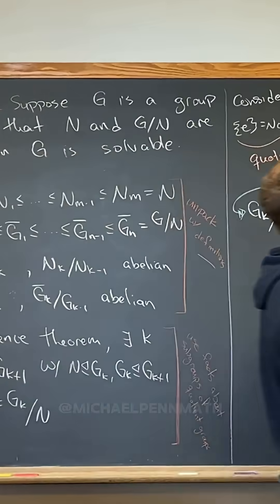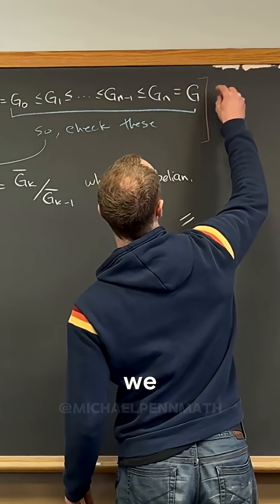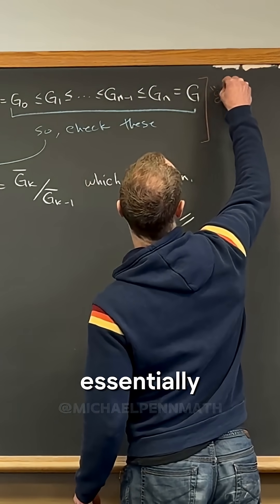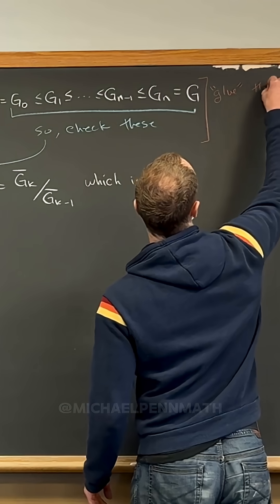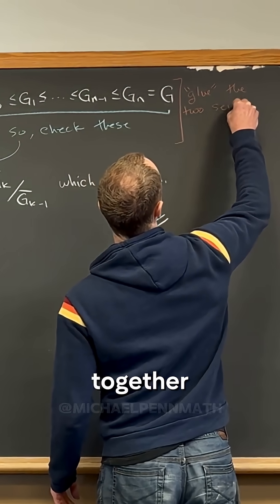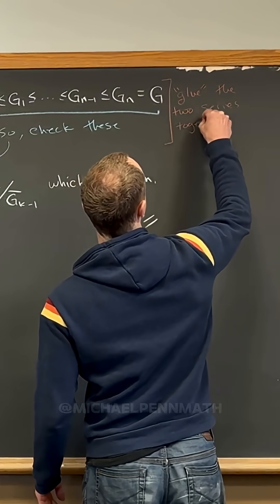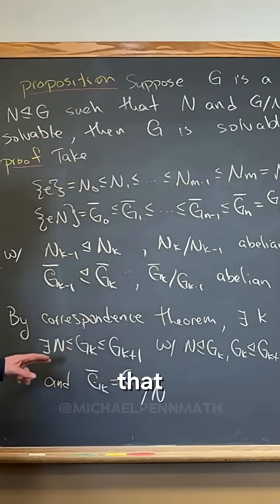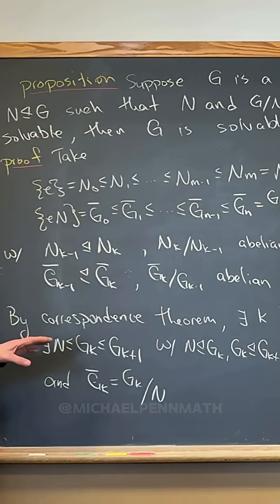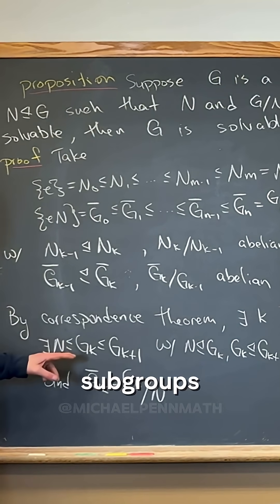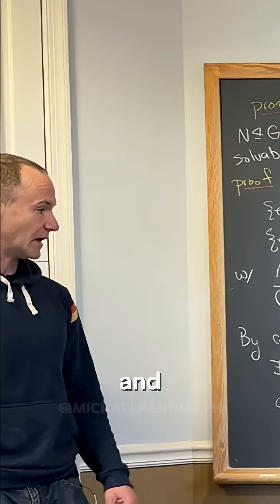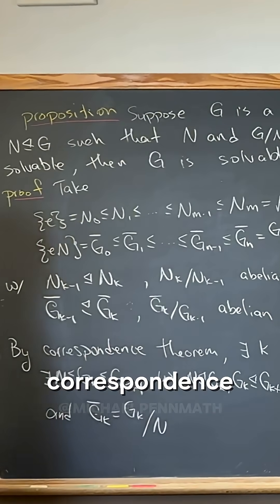Then we essentially glue the two series together. Now that we've got subgroups of the group, not just the quotient, not only do we have subgroups of them, but they go in this list. We know normality because that's part of the correspondence theorem as well - normal subgroups of the quotient group.